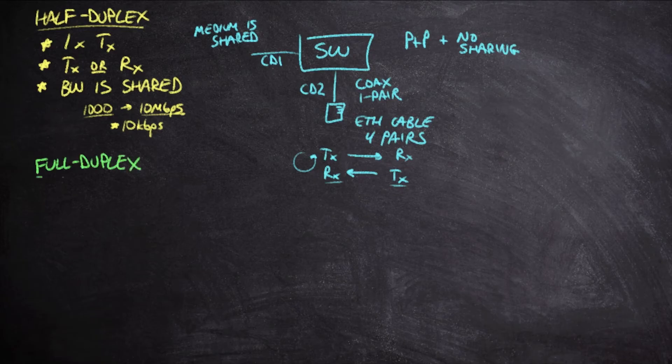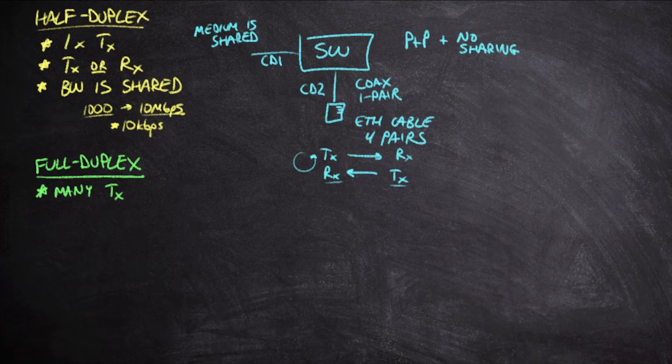Full duplex flips the whole half-duplex thing on its head. It makes it so that we have a brand new set of characteristics. First of all, we can have many transmitters at a time. Basically, anyone can transmit whenever they want. And the reason is right here. We just saw it.